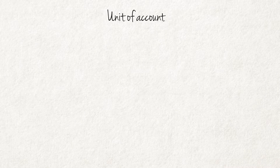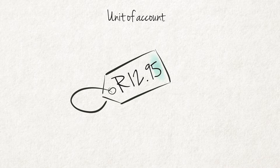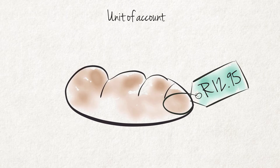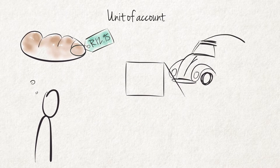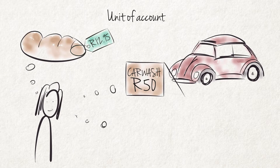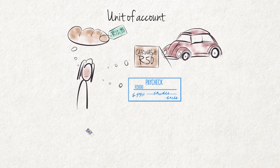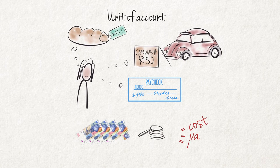Unit of Account: The value of items and the prices of goods and services are expressed in terms of money. For instance, the price of bread is stated as 12 Rand 95 cents at your local store, or the value of cleaning your dad's car is worth 50 Rand to him. Likewise, remuneration is determined in monetary terms — for instance, 5,000 Rand per month. Money therefore serves as a common denominator to express cost, value, and income.